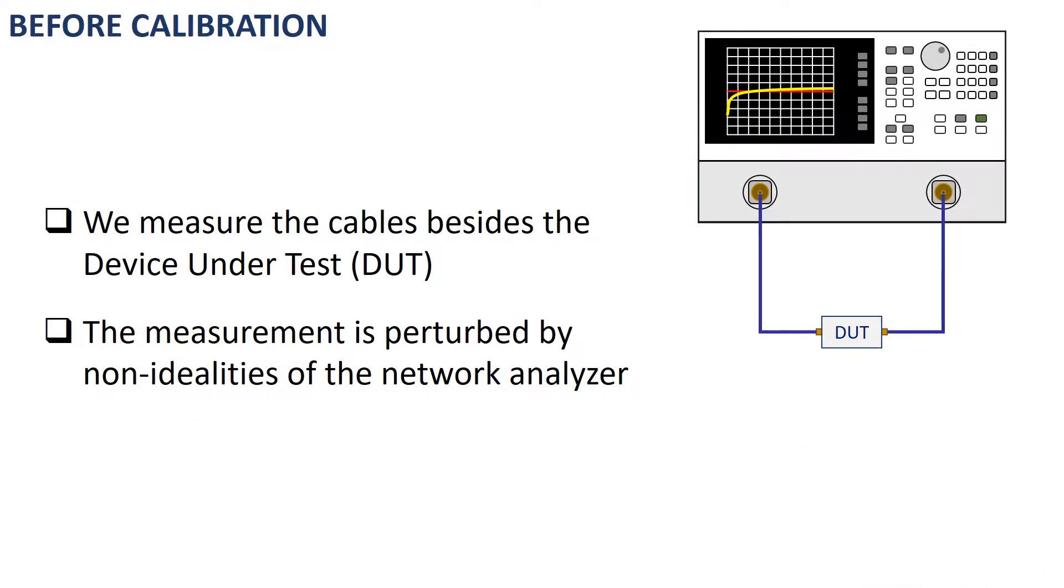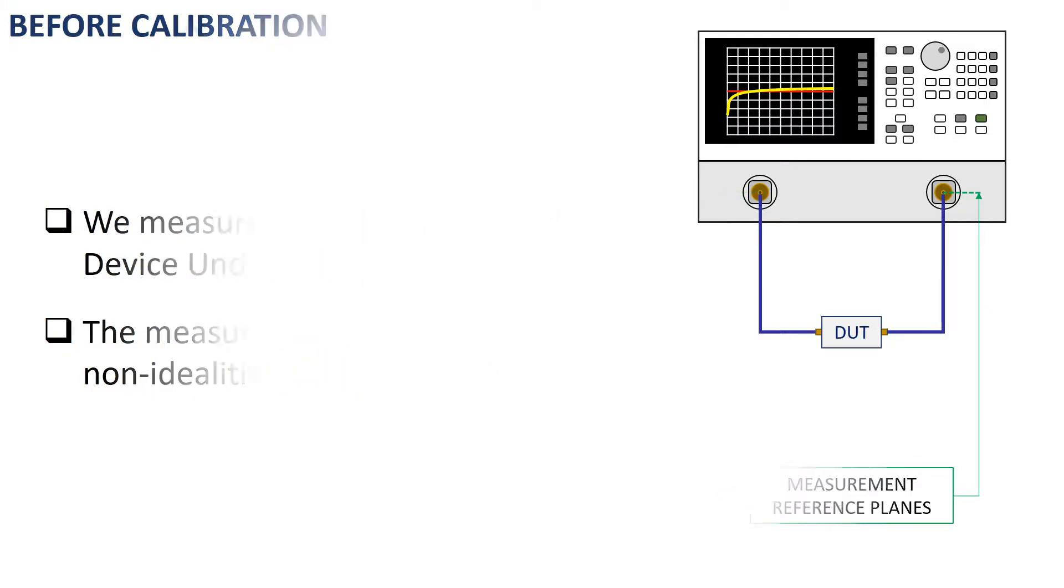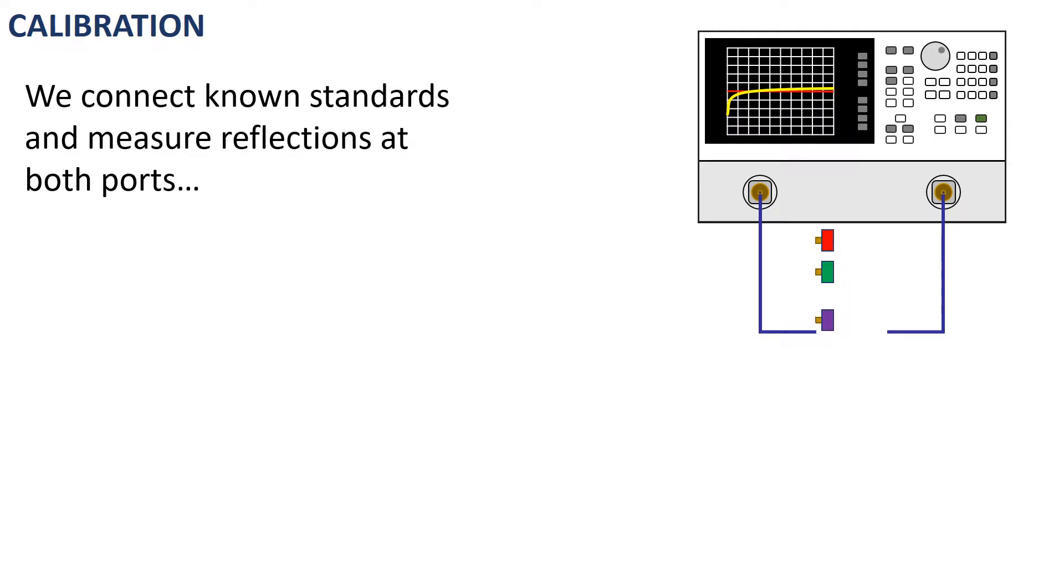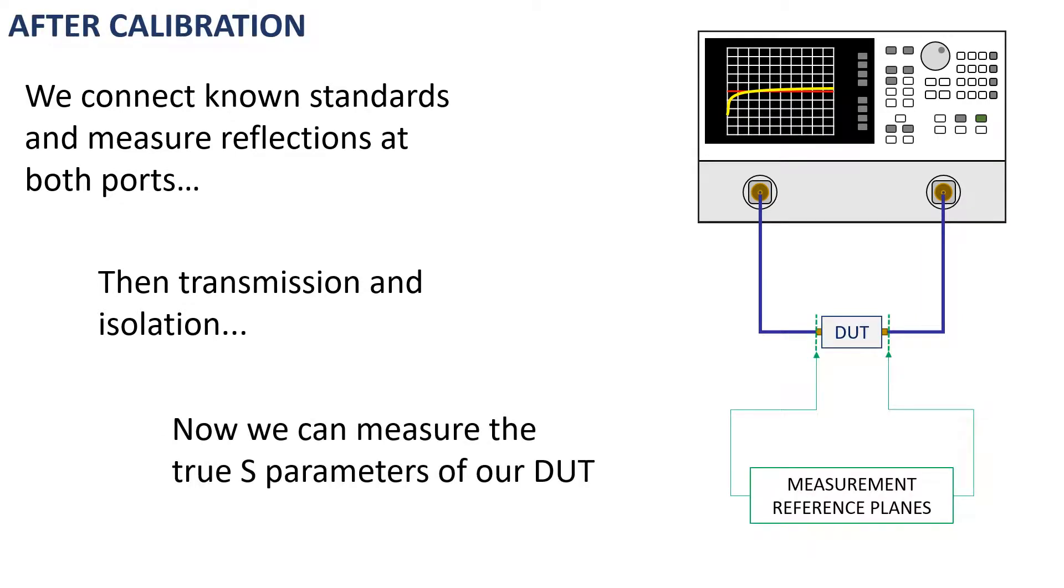When we measure the S-parameters of a circuit, the measurement is perturbed by the influence of cables and the instrument's own non-idealities. A calibration simulates a perfect network analyzer system with ideal cables. It measures the magnitude and phase responses of known standard devices and compares the measurement with actual device data. Then it uses the results to characterize the system and effectively remove systematic errors with a mathematical model implemented in the analyzer hardware.